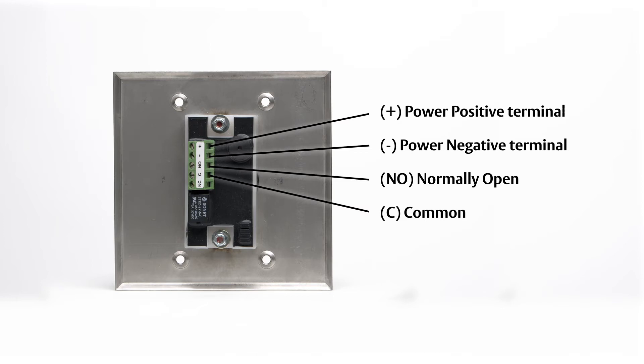In this example, we'll use the following color wires: red for the power positive, black for the power negative, white for the normally open, and green for the common.